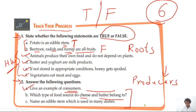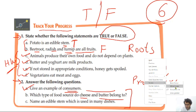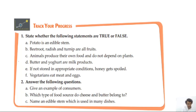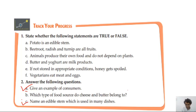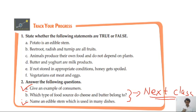For homework, do question number two A and question number three. Question number B is for the next class, because that part covers pages we haven't studied yet — it will be discussed in the next class. You don't have to do question number B now.